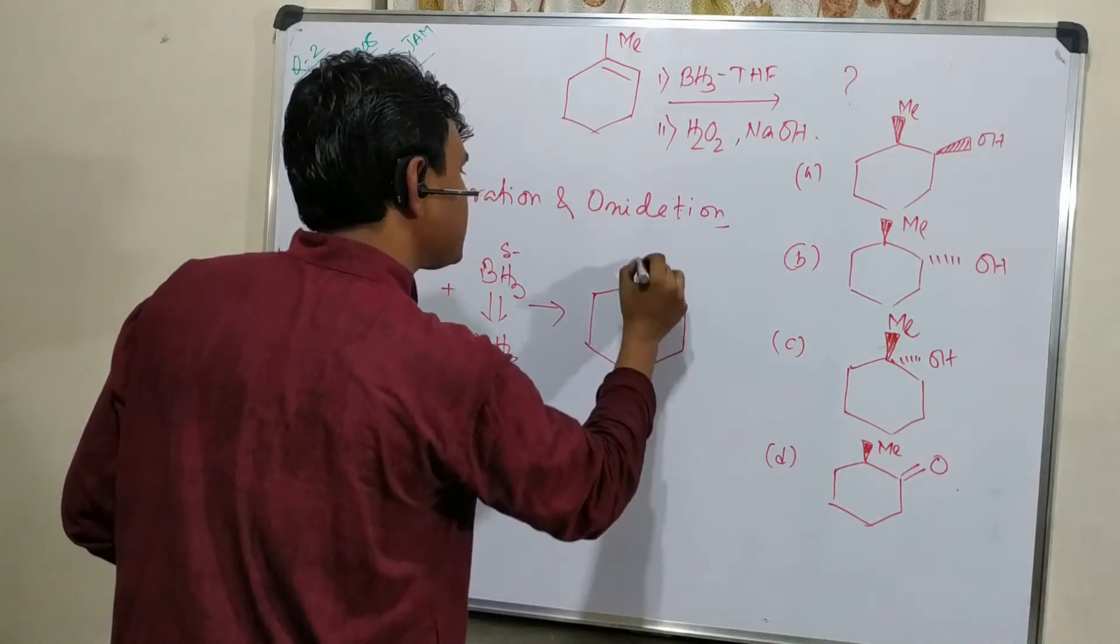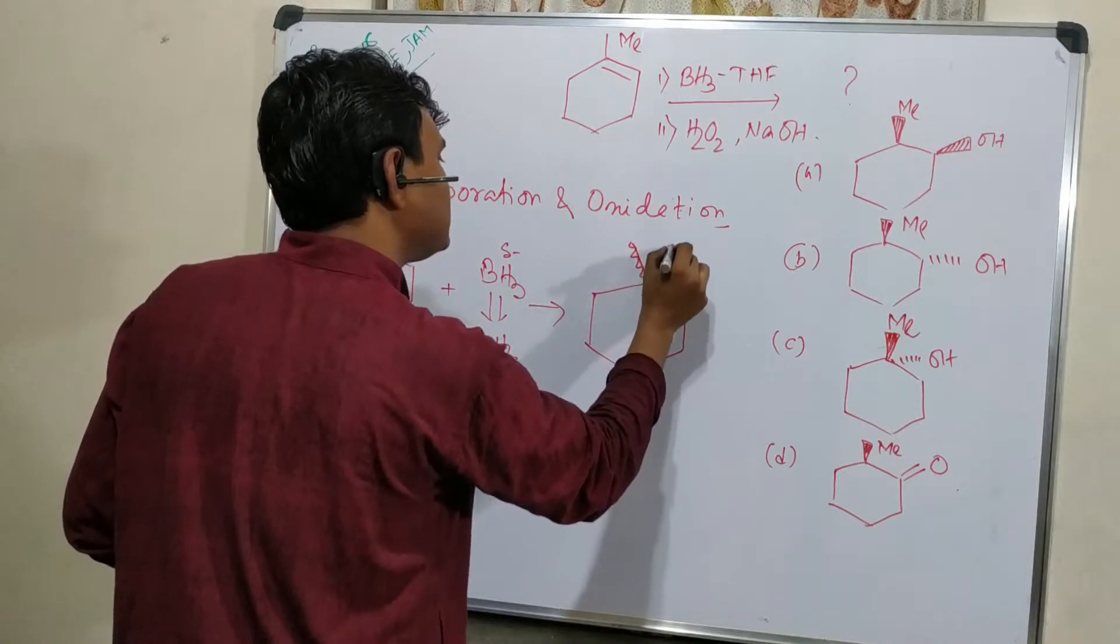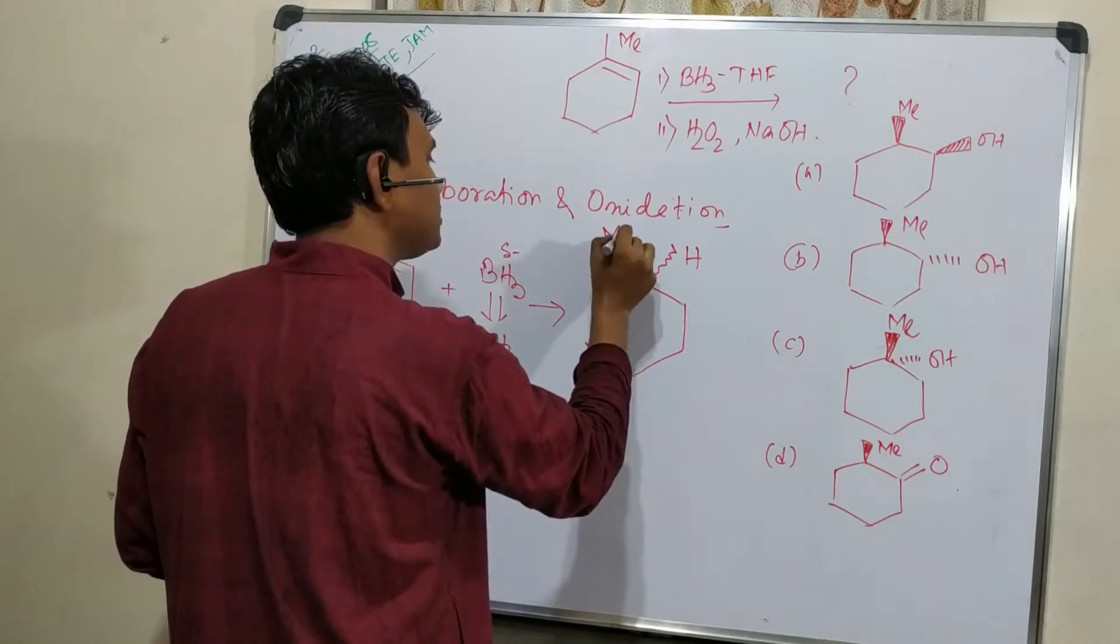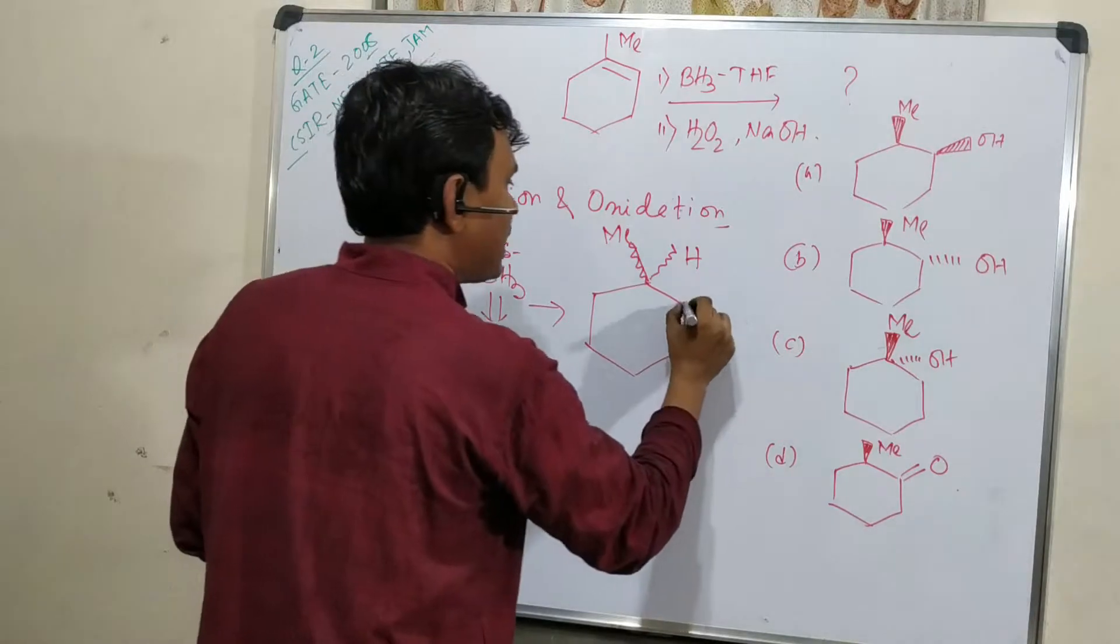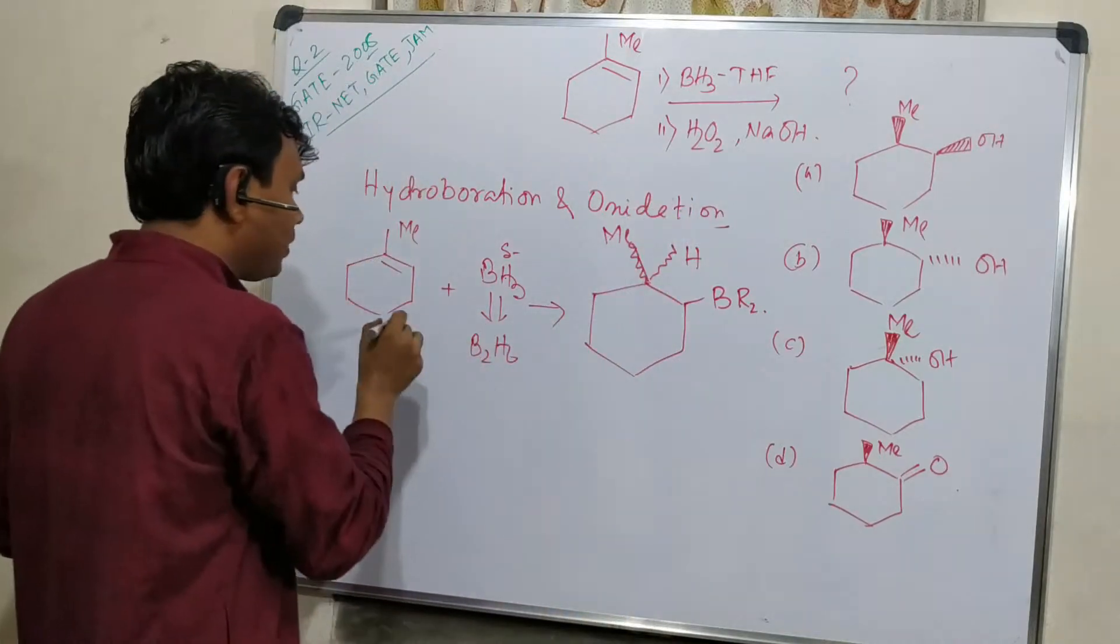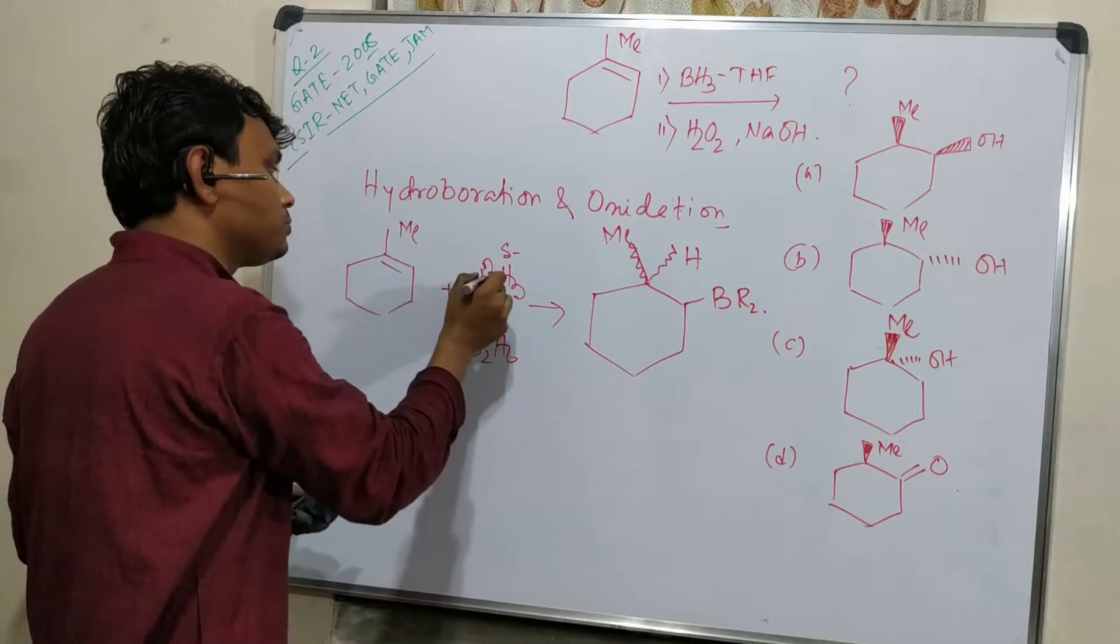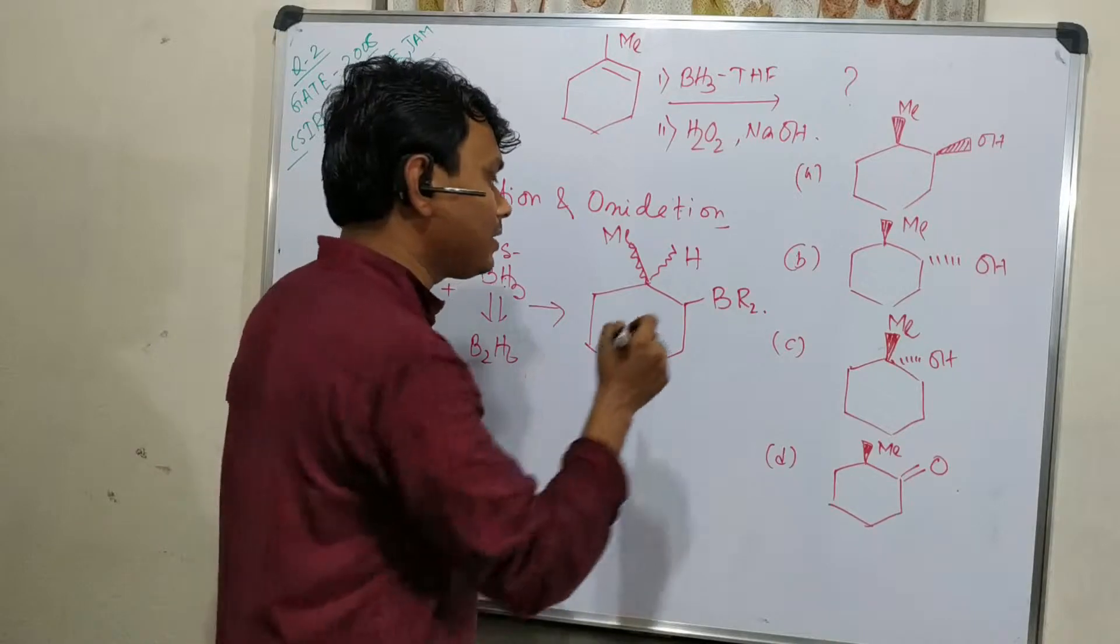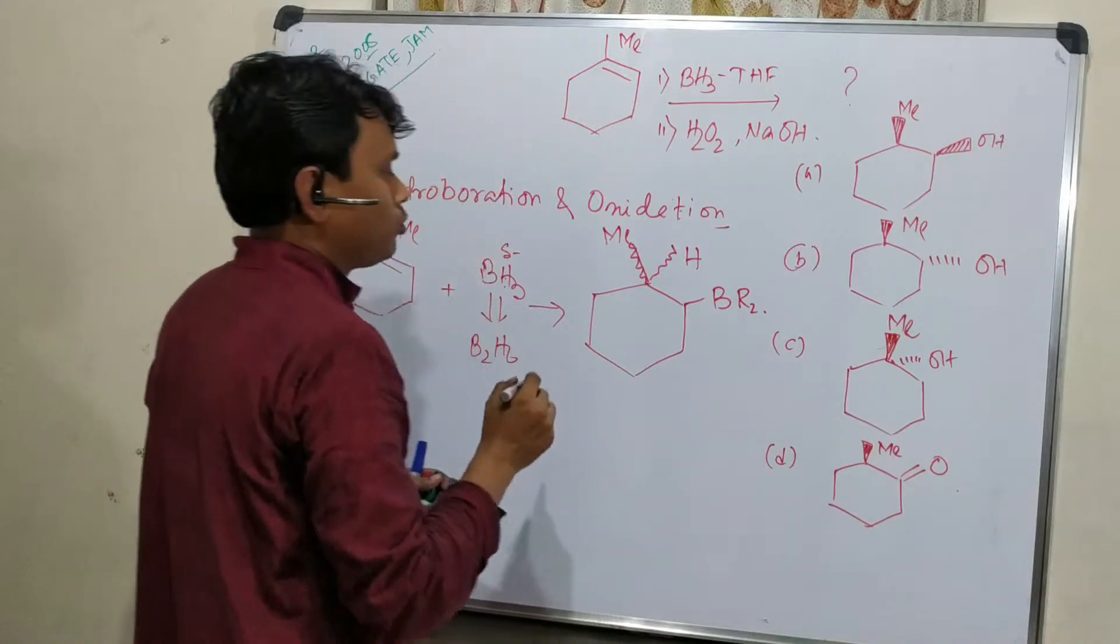According to Markovnikov's rule, the negative part of the addendum will attach to that carbon which is poorer in hydrogen. So the hydride will attack here and get attached here. If hydride gets attached here, then this is hydride and this is methyl. Right now we're not sure which stereoisomer will be produced, and this is B.